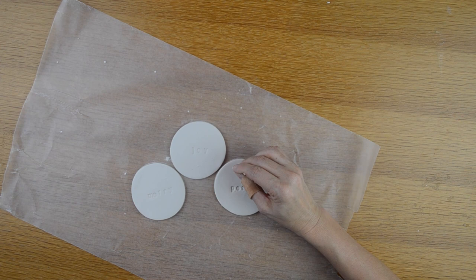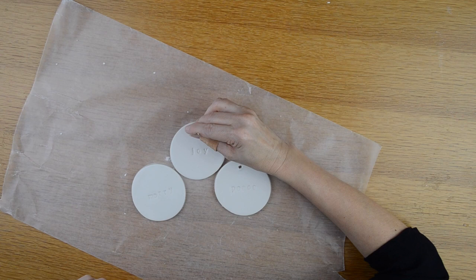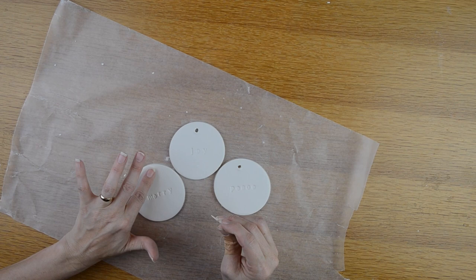Now I'm going to take a toothpick and make a hole at the top of each of my ornaments and this is going to be the hole where my ribbon goes through so I am making the hole big enough to where a ribbon will stick through but not too big of a hole.